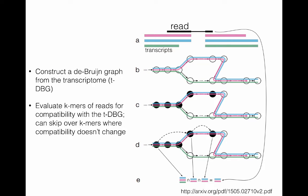The process proceeds as follows in this diagram. On the right, you have a read in black that spans an intron. Then you have a set of transcripts in pink, blue, and green. First, when you build an index in Kallisto, you're constructing what's called a De Bruijn graph of the transcriptome from the transcripts. You can think of this as kind of like a path through the transcriptome.